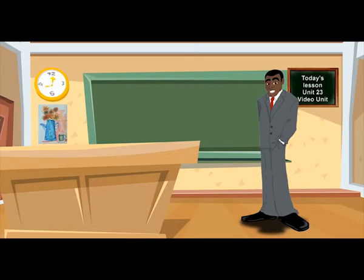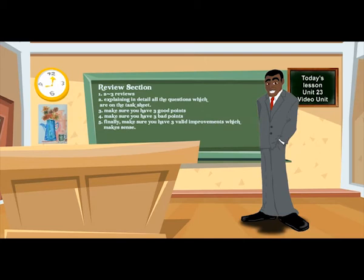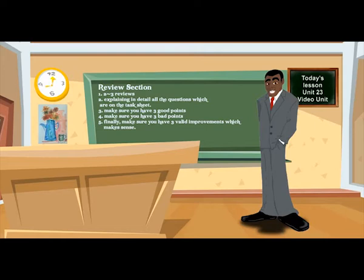The different sections are reviewing, designing, creating, and testing video. Under the Review section, you will need to make sure that you've got at least two to three reviews. You need to explain in detail all the questions which are on the task sheet. Make sure you have three good points and three bad points about the video. You will also need to ensure that you have three very valid improvements.